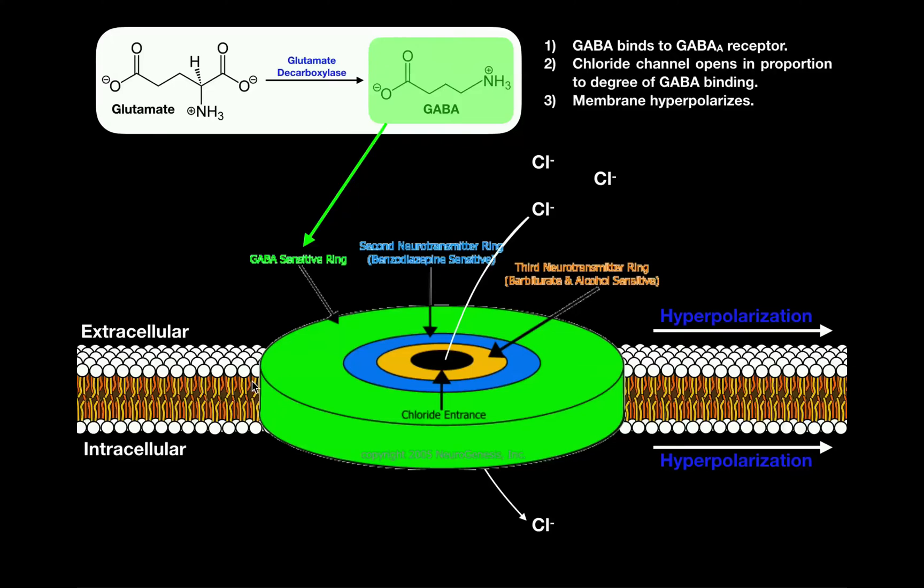We're going to assume that this is the postsynaptic neuron, and its membrane is going to have GABA-A receptors in it. Obviously this is not what the GABA-A receptor looks like. This is really just a conceptual picture because it's going to illustrate not only GABA's function, but also some of the allosteric modulators such as benzodiazepines and barbiturates.